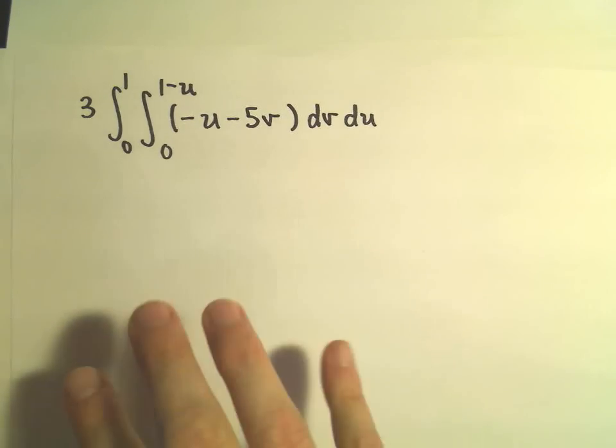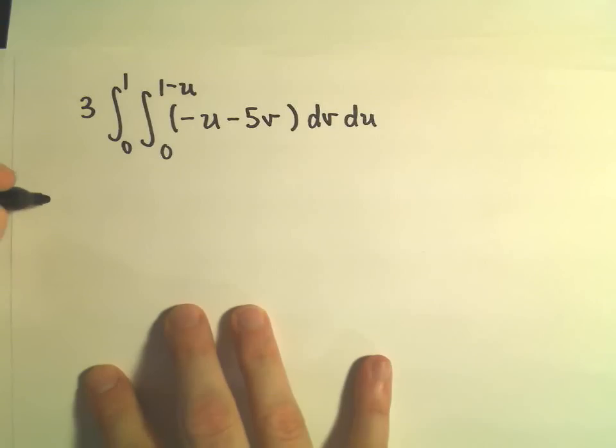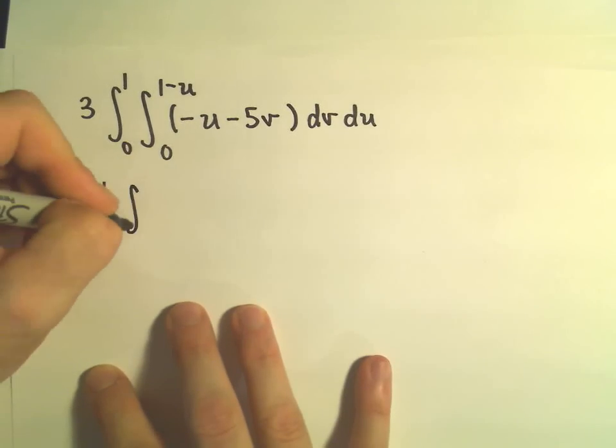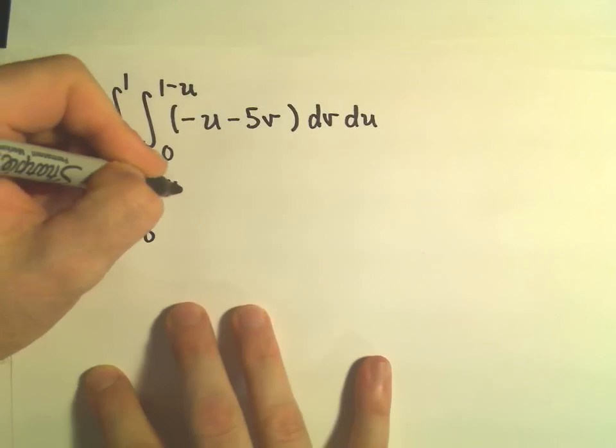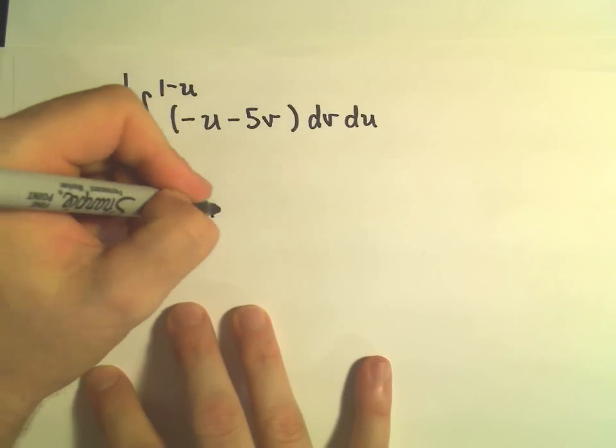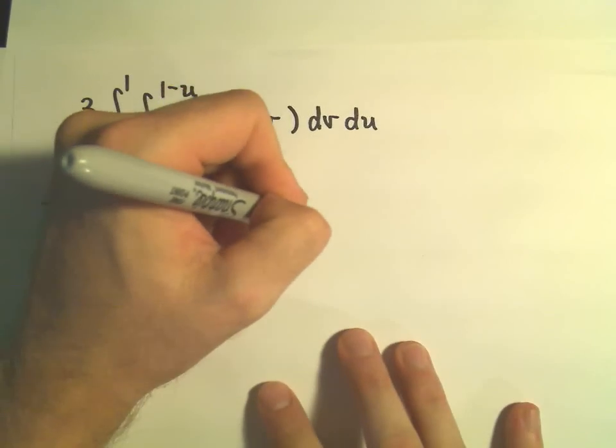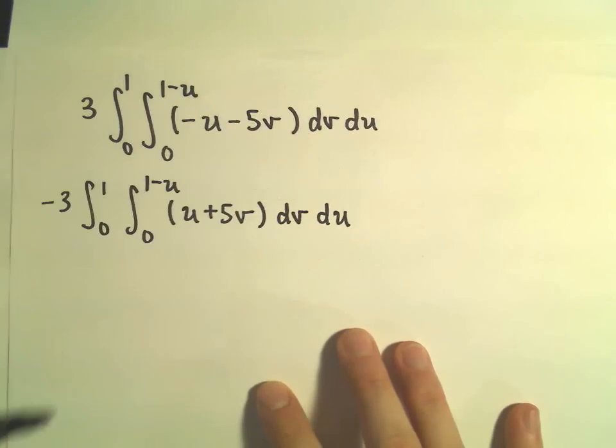So the first thing I'm going to do is just factor out this negative that's inside of here. So that'll give us negative three, the integral from zero to one, zero to one minus u, and then we'll have positive u plus 5v. And we're going to integrate with respect to v and then with respect to u.